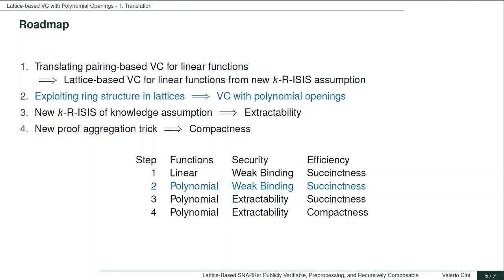Then, using the fact that we are now working over rings, we can show that the VC scheme actually supports opening to any polynomial map of constant degree. Then, by introducing a knowledge version of the k-R-ISIS assumption, we show that the security of the VC scheme can be improved from weak binding to extractability.